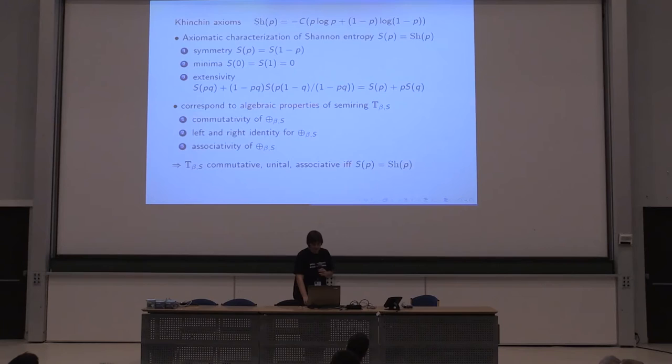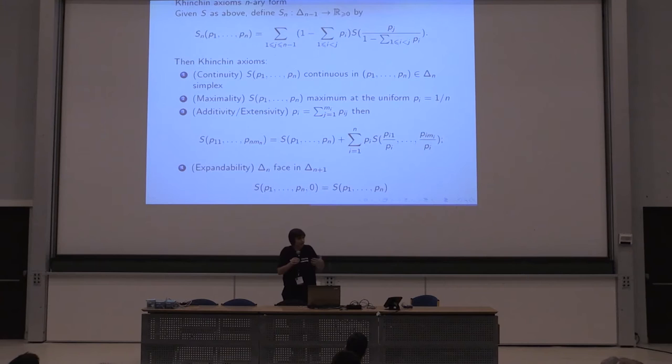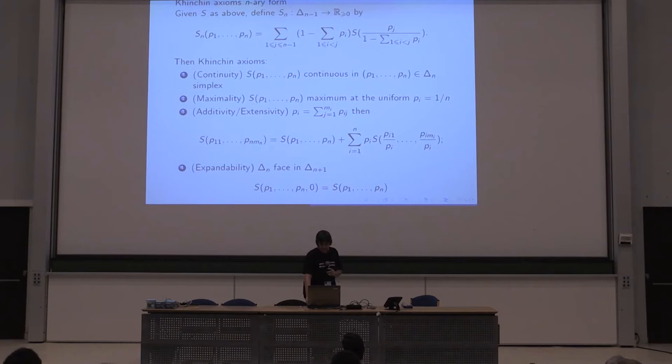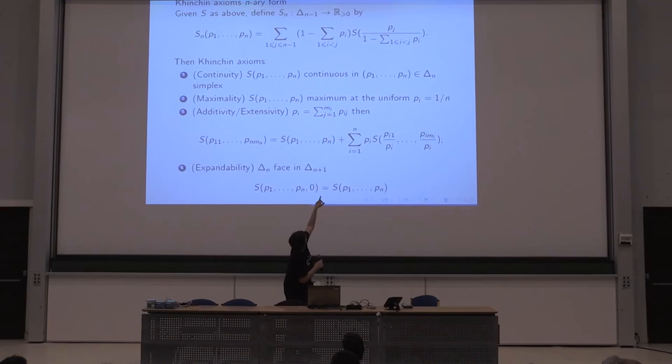Moreover, you can extend this to n-ary forms by repeating this operation over n variables — summing n variables in these semi-rings. The usual Khinchin axioms in terms of continuity, maximality, and the extensivity property over how it behaves when you add another dimension — you can reconstruct the n-ary case in terms of the binary measure, which is exactly adding up n elements.